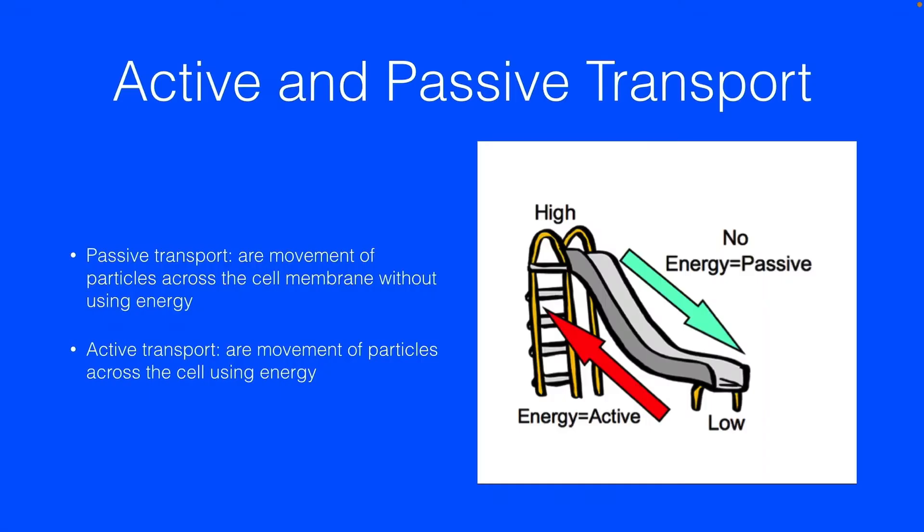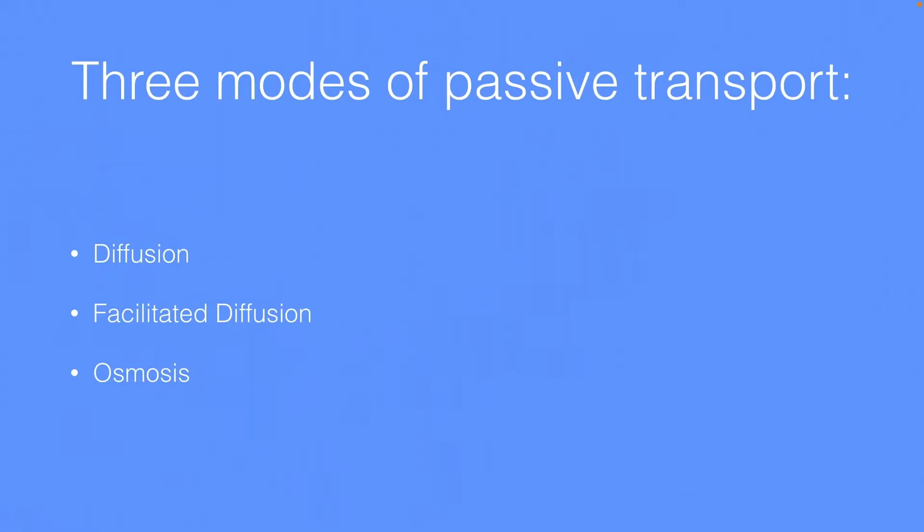Now we have two types of transports: active and passive. Passive transport is movement of particles across the cell membrane without using energy. Basically passive transport is automatic. Active transport is movement of particles across the cell while you use energy. Basically it's not automatic and it requires energy.